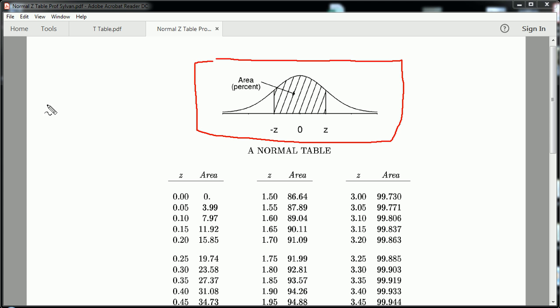Let's review some basics on the normal table. Specifically, the standard normal bell-shaped curve is centered at 0, has a mean of 0 and a standard deviation of 1.